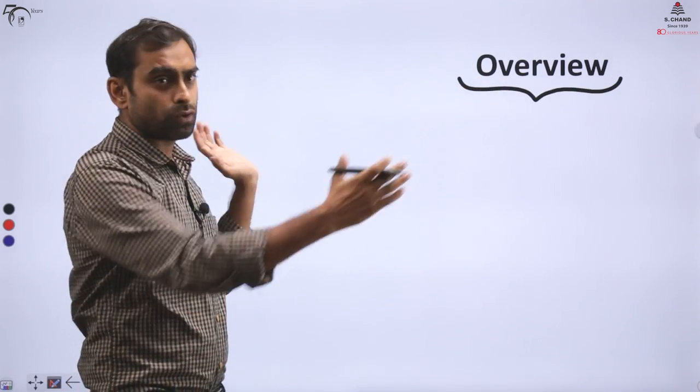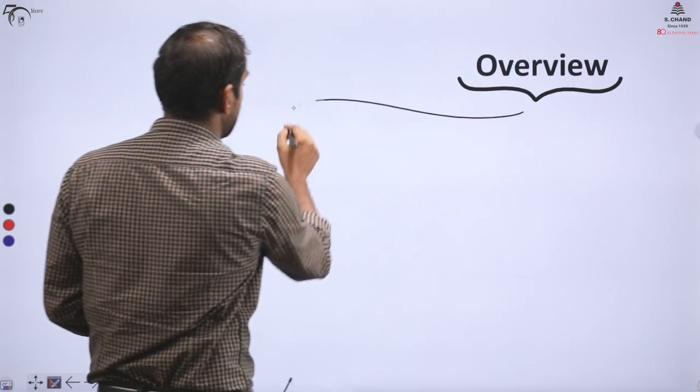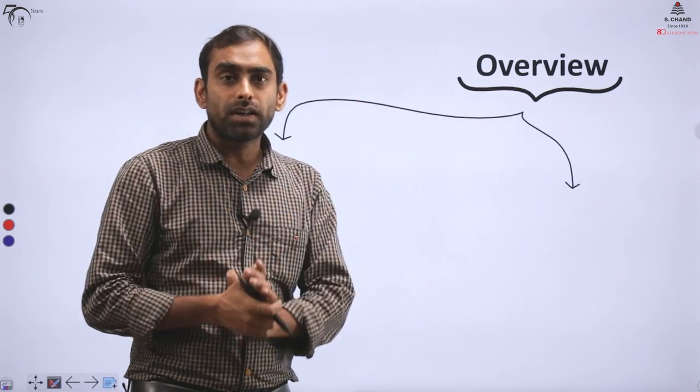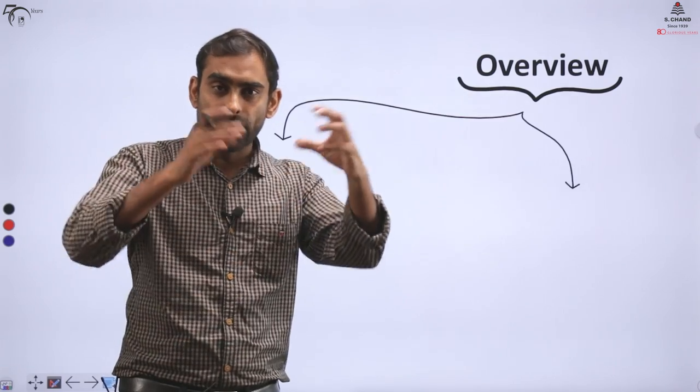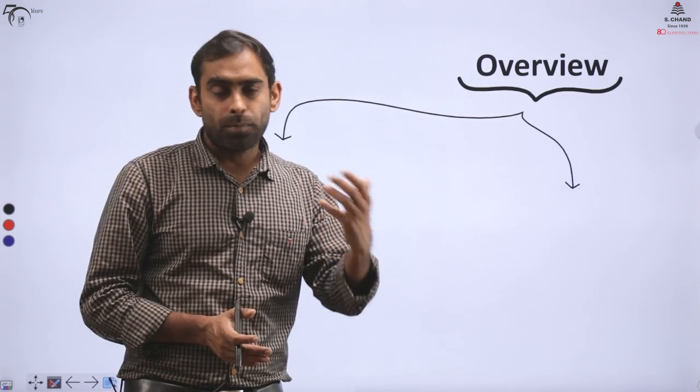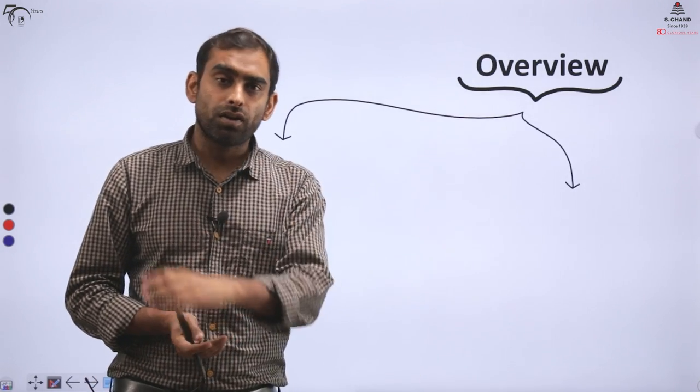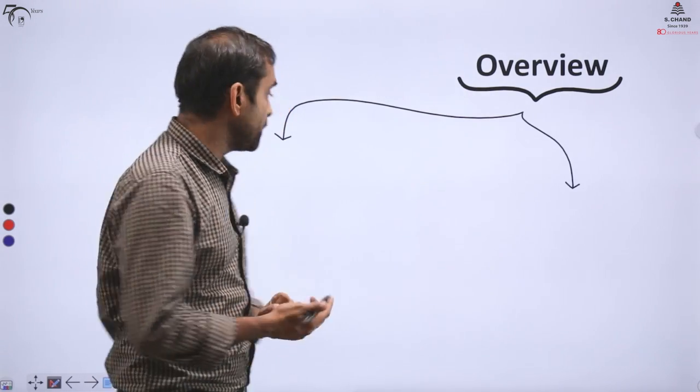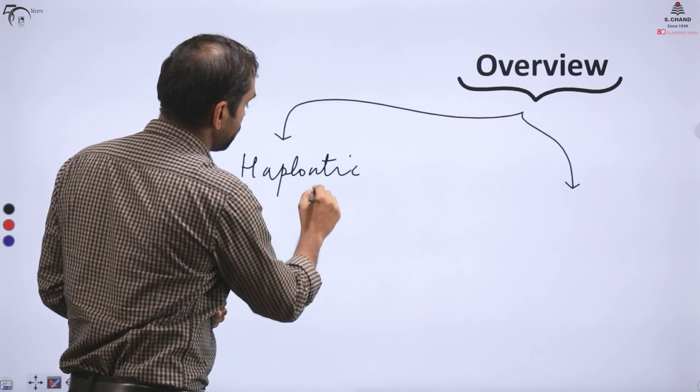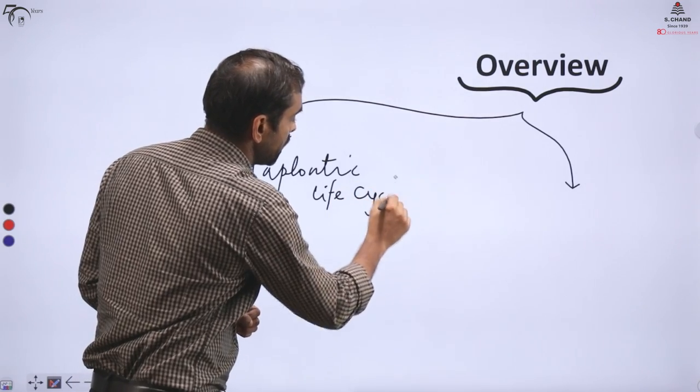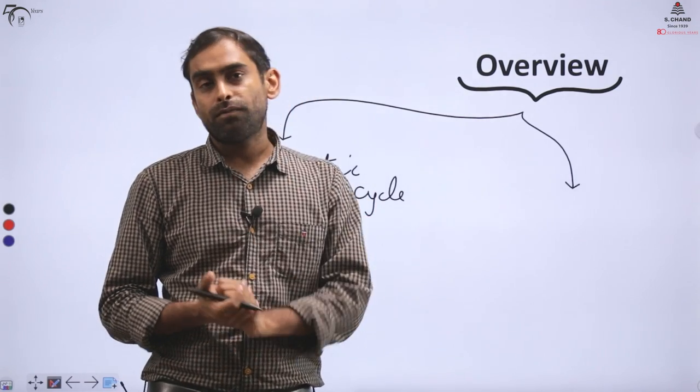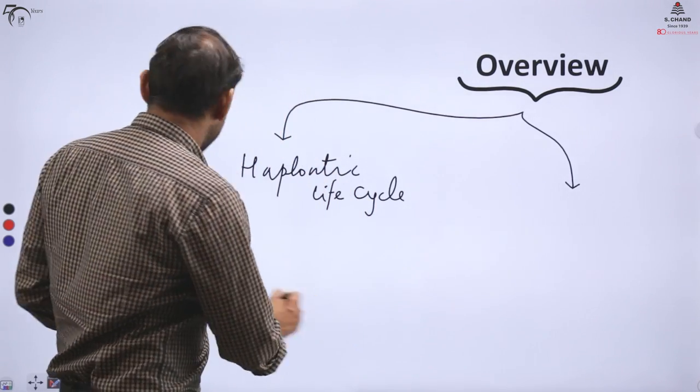First, I would like to give you an overview of what are the life phases. Either life forms may have haploid phases predominantly, or they may be diploid. Life forms may be either haploid, which is seen in majority of early organisms, primitive organisms. They have haploid life forms and that is called haplontic type of life cycle.